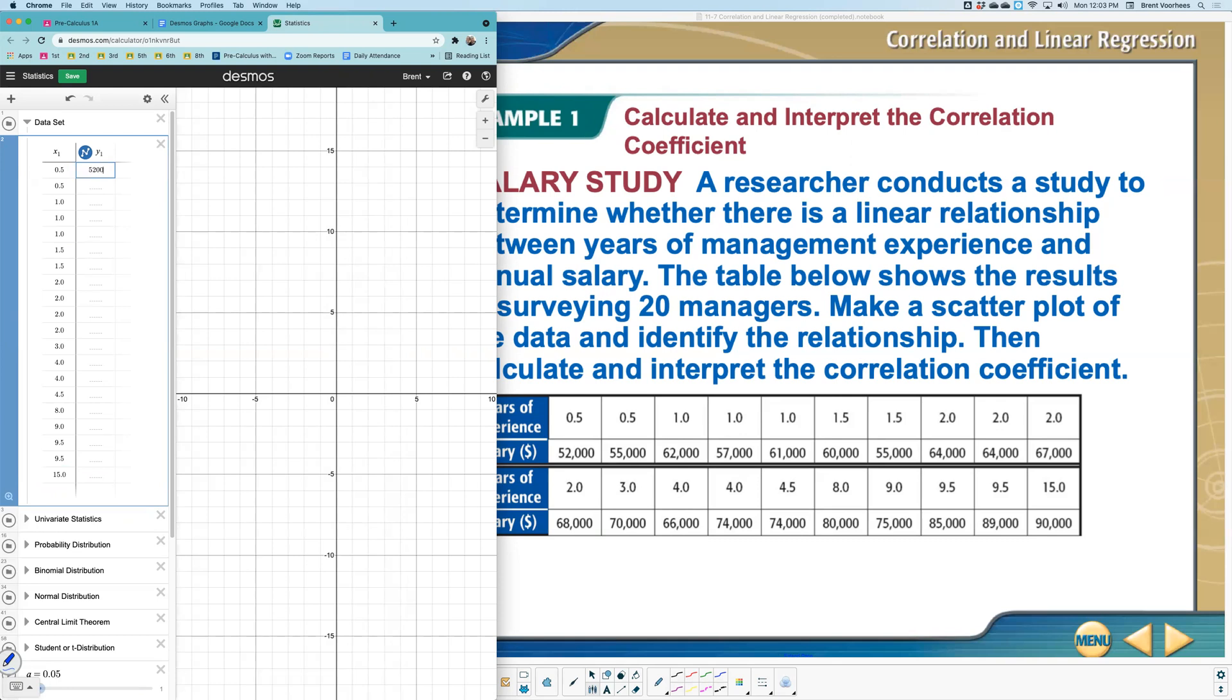So let's do the Y values now, 52,000. I'm not going to type in the comma, 62,000, 57,000, 61,000, 60,000, 55,000, 64,000, another 64,000. So these values are adding up here.